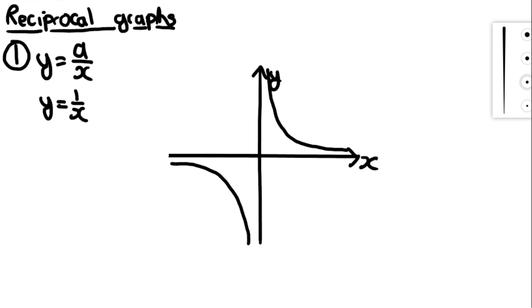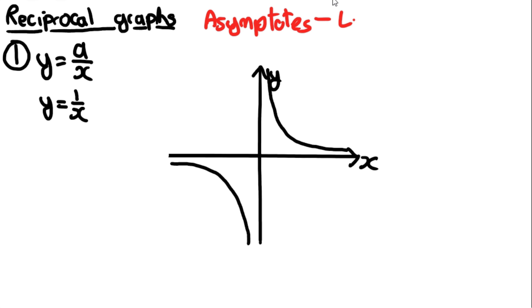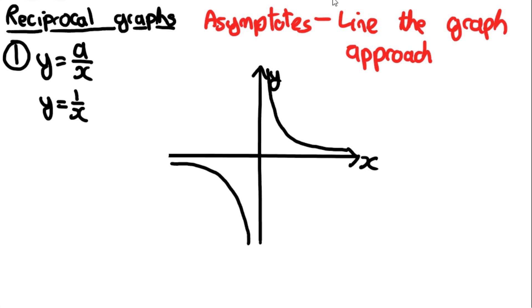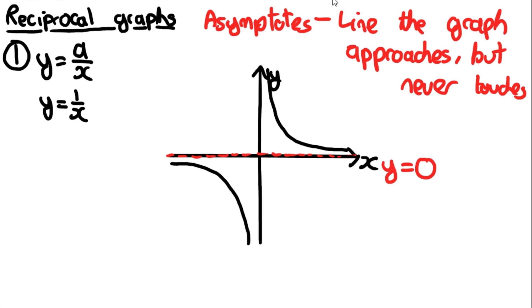The most important aspect of reciprocal graphs is something called asymptotes. An asymptote is a line that the graph approaches but never actually touches. Every reciprocal graph has two asymptotes. This graph has an asymptote at y = 0, because that is the line where all y values are 0, and an asymptote at x = 0.